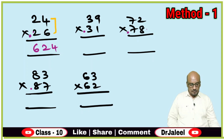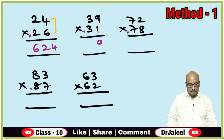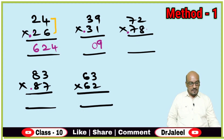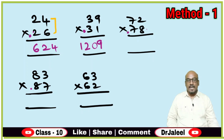In the second problem, 1 into 9 is 9. Copy it here. Remember, you should not copy a single digit — if it is 9, you should write it as 09. Then on the left side, 3 is there. Increase 1: it becomes 4. 4 × 3 is 12. So the answer is 1209.